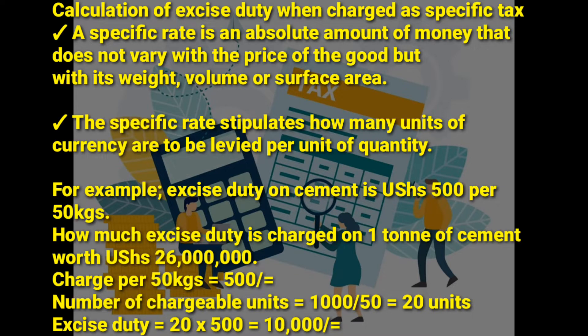In our previous videos we defined what a specific tax is. The specific tax rate is an absolute amount of money that does not vary with the price of the good, but it varies with its weight, volume, surface area, or other characteristics.